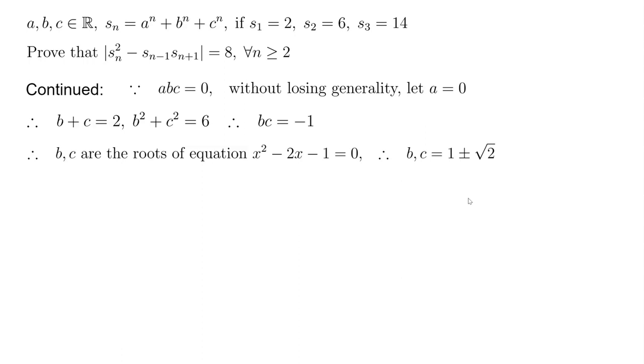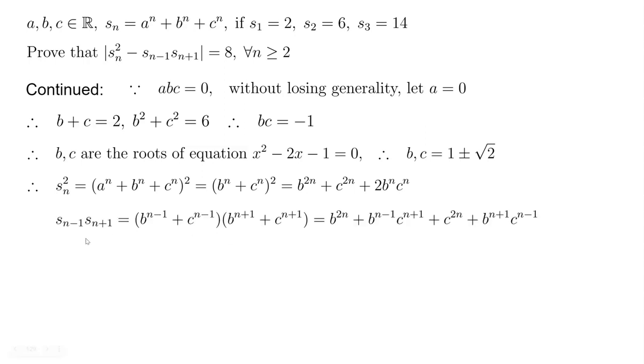Now we got the actual value of a, b, c. Theoretically, you can calculate anything. But this target expression is actually easier to calculate. So let's do that. s_n squared equals just plug that in and a is 0. So we can expand this. This is b^{2n} + c^{2n} + 2b^n c^n.